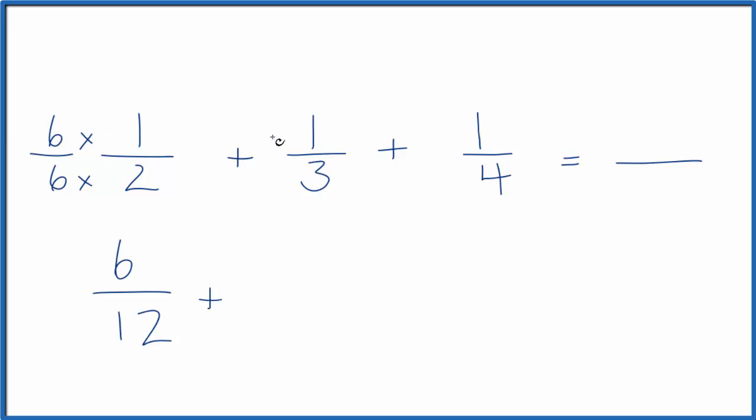Here I want to get this to twelve, so I need to multiply by four. But I have to multiply the top by four, so I don't change the value. Four times one is four. Four times three is twelve. So now we have twelve as our denominators.